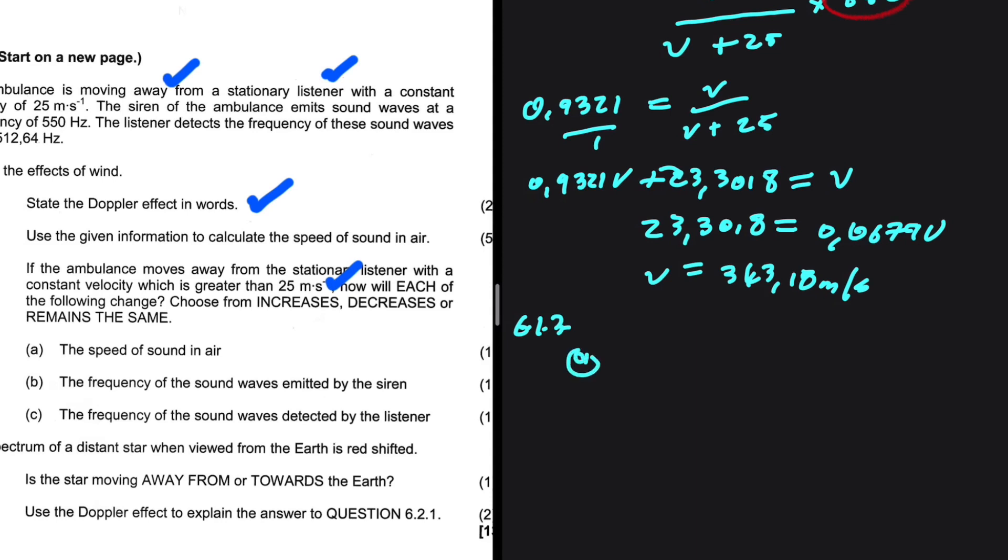A, the speed of sound in air. The speed of sound in air will remain constant, right? The speed of sound in air is not a function of how fast the velocity of the source is. So this will remain the same.